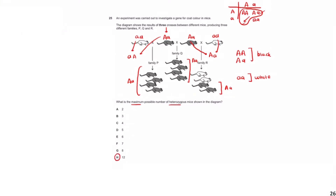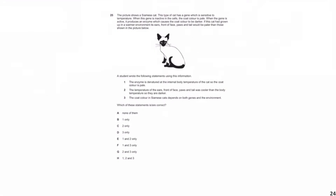Hopefully that question is now clear. It was really just about assuming the maximum number of mice are heterozygous and testing those assumptions. Moving to our next question: the picture shows a Siamese cat. As you may have seen, some of the extremities are dark whereas the main body trunk is white. This cat has a gene sensitive to temperature — when the gene is inactive the coat color is pale, and when active it produces an enzyme causing the coat to be darker. If this cat had grown up in a warmer environment, its face, paws, and tail would be pale.